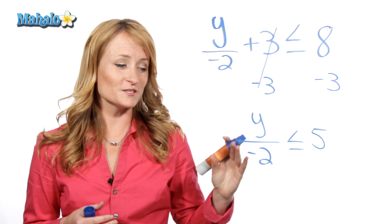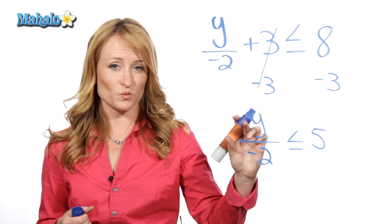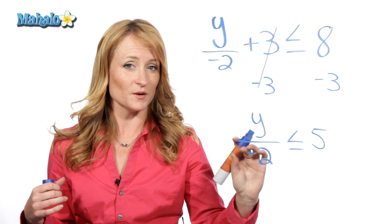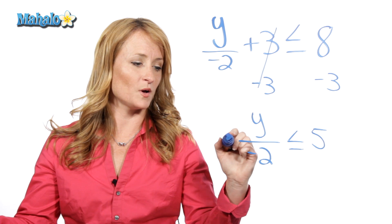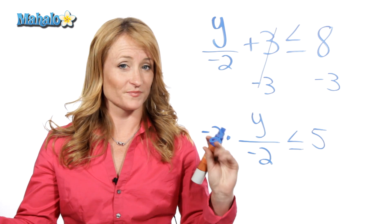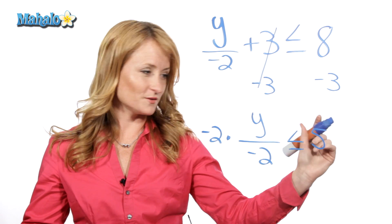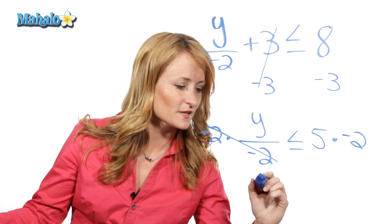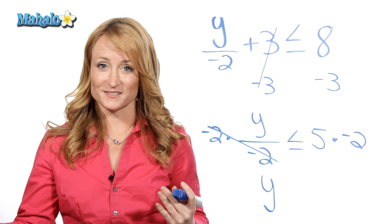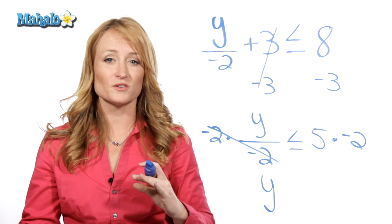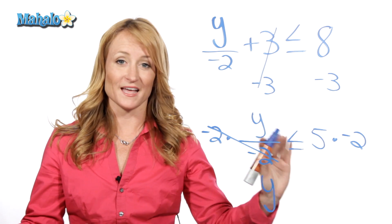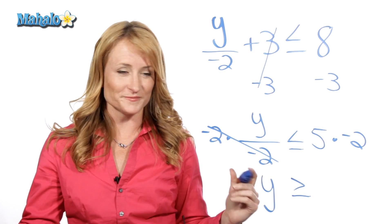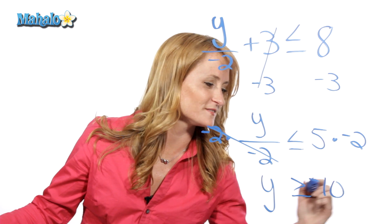Now remember, here's the spot where most people make a mistake. In order to get this y by itself, we have to do the opposite of what's happening. So right now we're dividing by negative 2, so the opposite would be multiplying by negative 2. What you do to one side, you have to do to the other. Multiply by negative 2. This cancels out, so we're left with y. And remember the rule: any time you multiply or divide by a negative with an inequality, that inequality needs to flip. So this needs to change to greater than or equal to, and 5 times negative 2 is negative 10. And that's how you solve for an inequality.